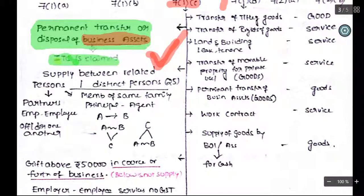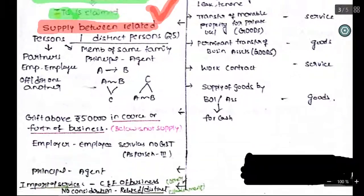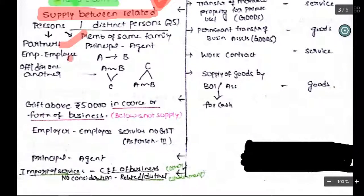Supply between related persons. There is supply between related persons — those who are related partners, employees, officers, or directors of one another. For example, A is the officer of B and B is the officer of A Limited. Also, members of the same family are related. If A is controlling B, then A and B are related. If A and B are commonly controlling C, then A and B are related. If C is controlling A and B, then A and B are also related.